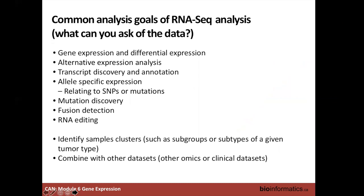In general, we look at gene expression — how much a gene is expressed and the differences between condition A and B. We can look at alternative splicing analysis, discover new transcripts particularly expressed in a given tissue, study allele-specific expression related to SNPs, perform mutation discovery, detect fusions from RNA-seq data, and look at RNA editing. Once your RNA-seq data is normalized, you can also do sample clustering to find which samples are more similar, such as subtypes of a particular tumor type, and combine with other clinical datasets.